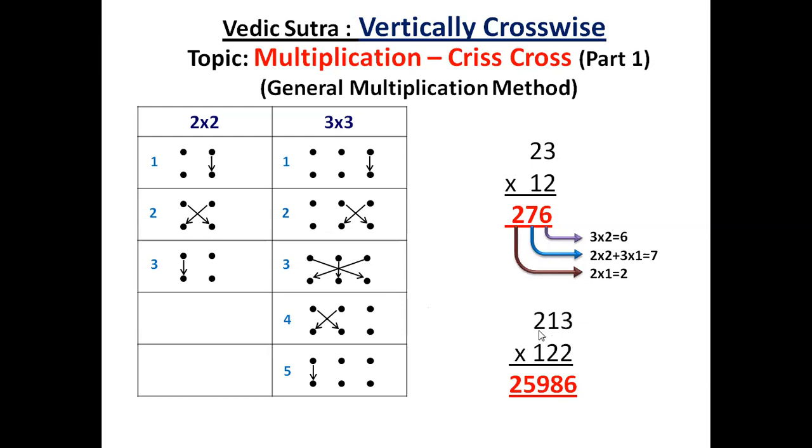Next step, fourth step. 2 into 2 is 4. Plus 1 into 1 is 1. 4 plus 1 is 5. And last step, 2 into 1 is 2.